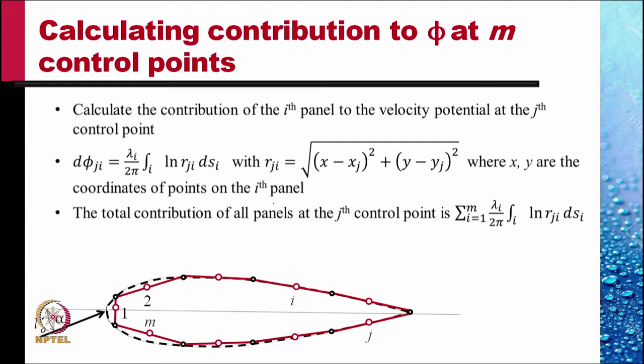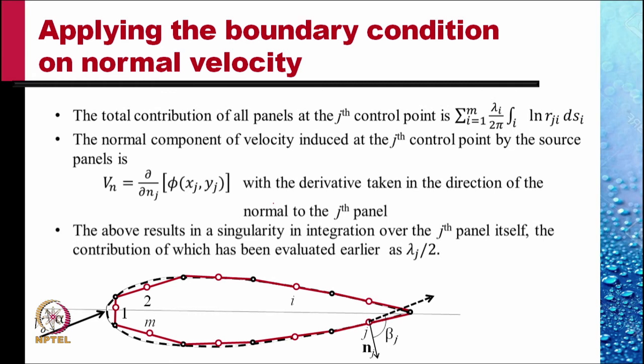The total contribution of all the panels at the jth control point is obtained as summation i equals 1 to m, lambda i divided by 2π, integral over the ith panel of ln r j i ds i. The normal velocity at the jth control point is obtained by taking the derivative of this potential with respect to n j.